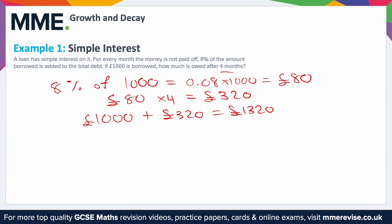Of course, you could also use the equation discussed previously. For simple interest: A equals P times (1 plus rt), where P is the initial investment — in this case a thousand pounds — r is the interest rate — in this case eight percent — and t is the time period — in this case four months.